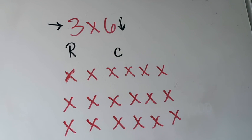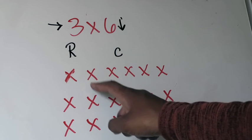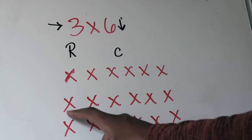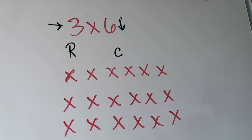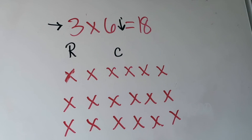But now you might be asked, okay, what is the product of three times six based on your array? I can count each of them individually — one, two, three, four, five, six, seven, eight, nine, ten, eleven, twelve, thirteen, fourteen, fifteen, sixteen, seventeen, eighteen. So that tells me that the product of three times six is 18.